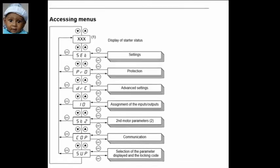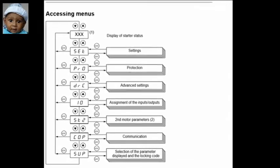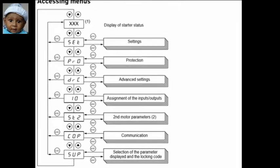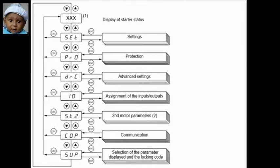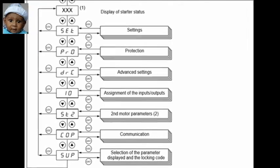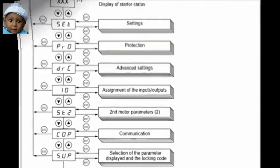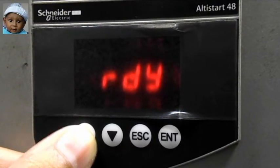Now we can see the full name of all the menus: setting, protection, advanced setting, assignment of the input outputs, second motor protection, communication, and the last one is selection of the parameter display and the locking code. So let's start. The first important parameter is setting.